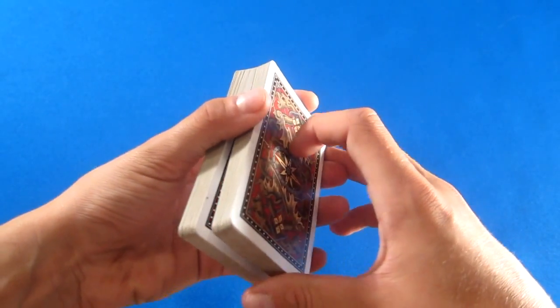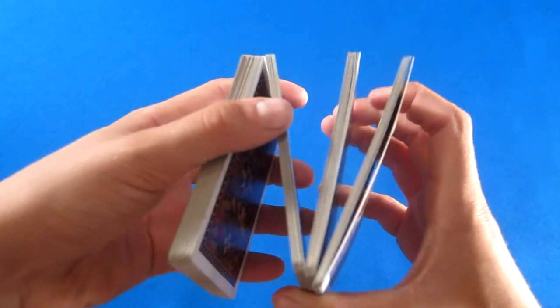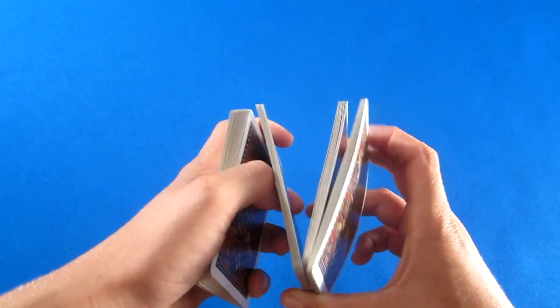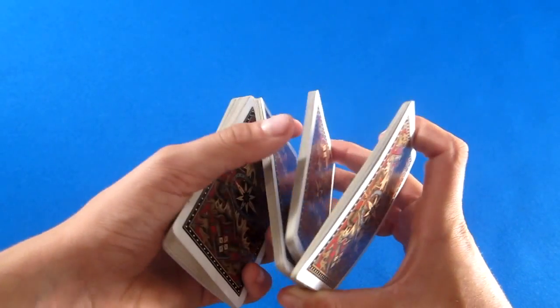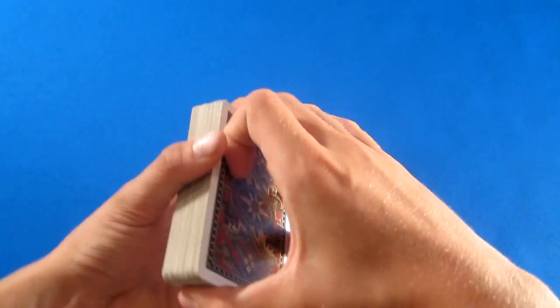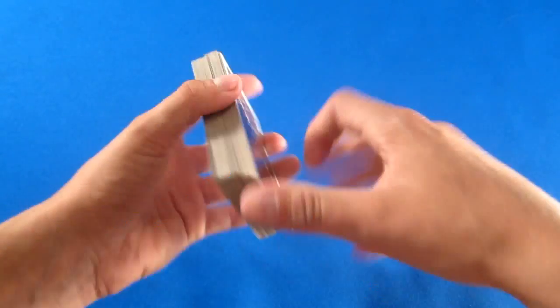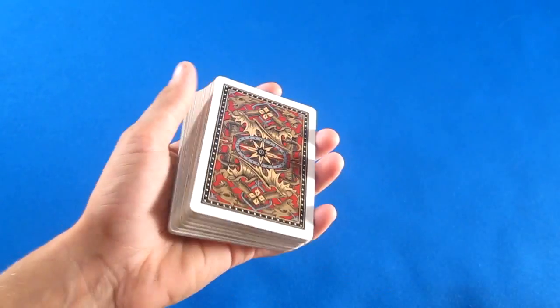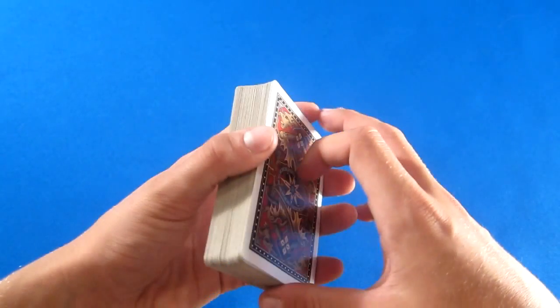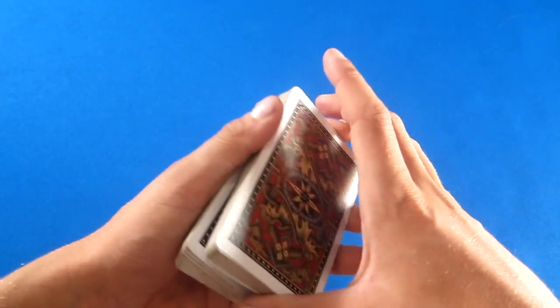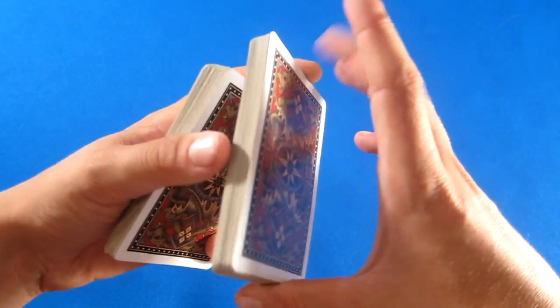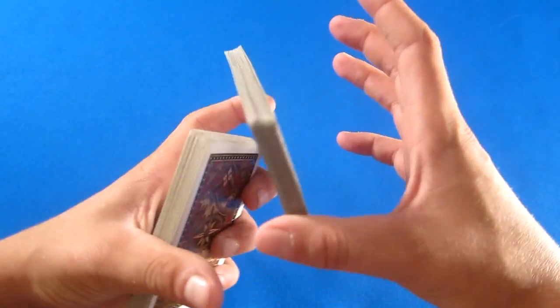You're going to start this off with a mechanics grip. And now what you want to do is you want to come over with your right hand and get into this formation. This is called the Z. So then using your index finger as a pivot point, you're going to lift up about half the deck. It's levered up in between your left index finger and your right thumb.